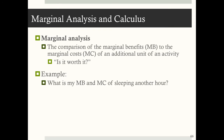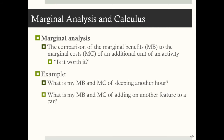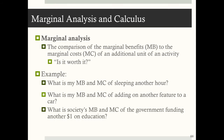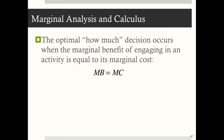For example, what is my marginal benefit and marginal cost of sleeping another hour? Or of adding another feature to a car? What is society's marginal benefit and marginal cost of the government funding another dollar in education? The optimal 'how much' decision occurs when the marginal benefit of engaging in an activity equals its marginal cost — MB equals MC.